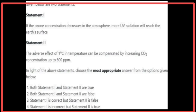Given below are two statements. Statement 1: If the ozone concentration decreases in the atmosphere, more UV radiation will reach the Earth's surface — Statement 1 is true. Statement 2: The adverse effect of a one degree Celsius increase in temperature can be compensated by increasing carbon dioxide concentration up to 600 ppm — Statement 2 is true. Both statements are true.